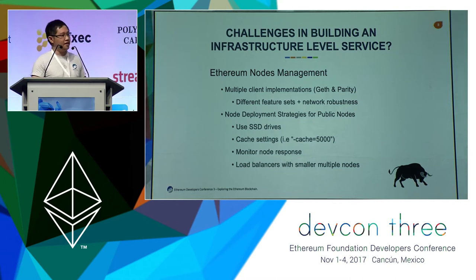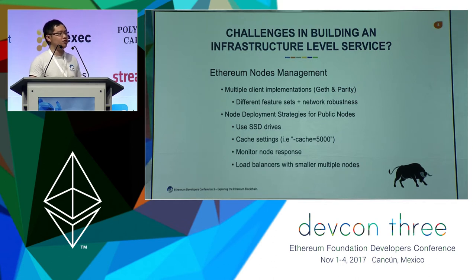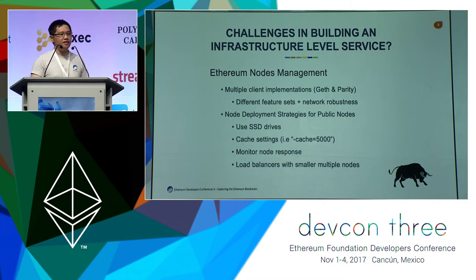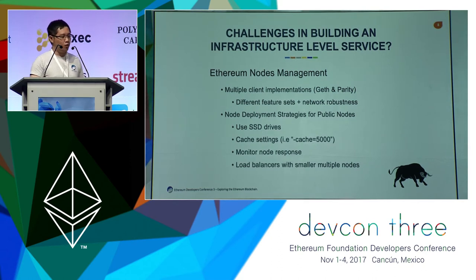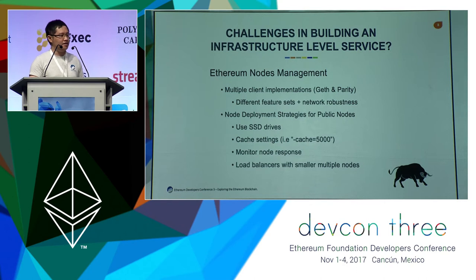At Etherscan in the earlier days, we ran three different client implementations: Geth, Parity, and EthereumJ. Over time, we managed to reduce this to just two clients — Geth and Parity. Why do we need to run two clients? While both clients support all the official APIs, there are certain areas where each excels. For instance, if you plan to use Remix Debugger, for now this works only with Geth. On the other hand, if you need to trace internal transactions, Parity provides an easy-to-use RPC endpoint that does this.